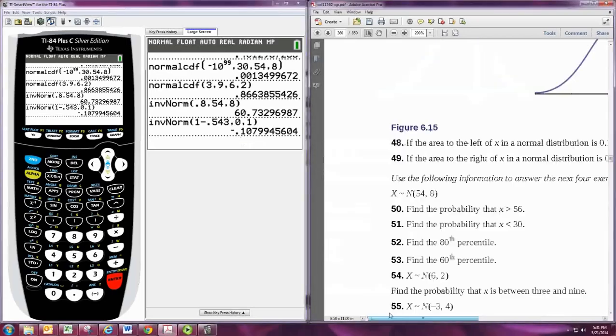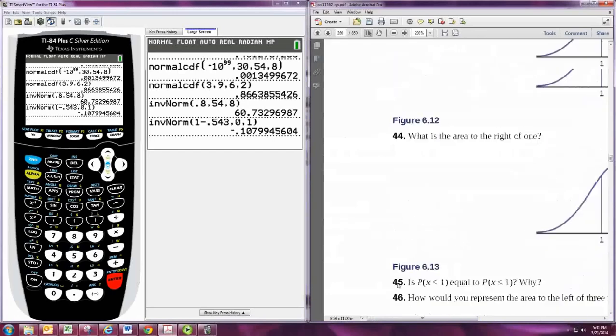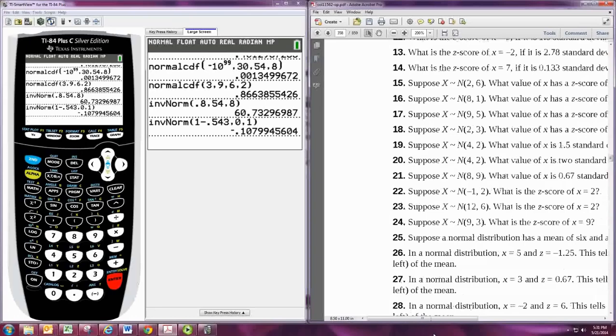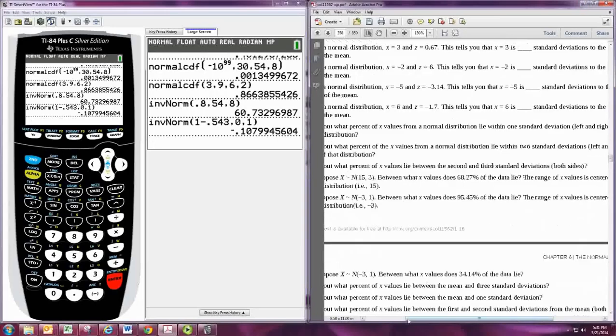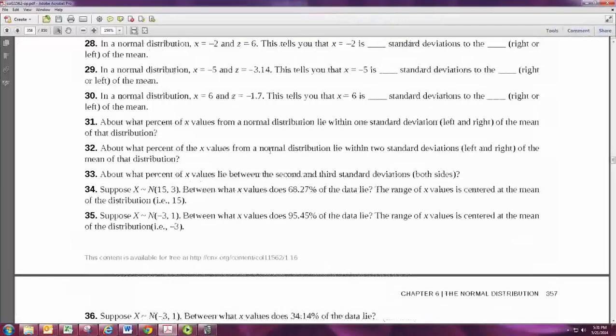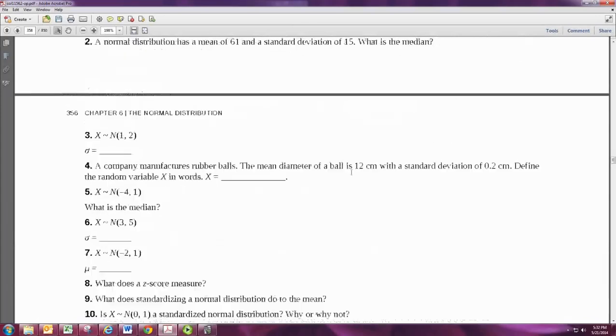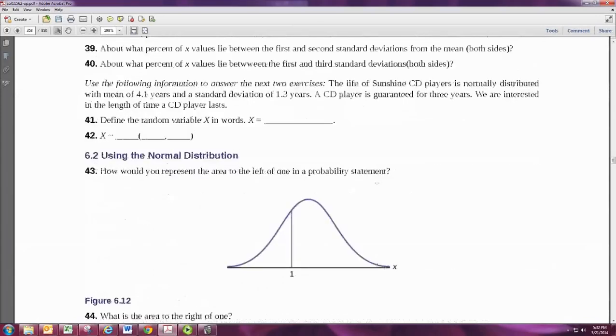The last type is to find the value of the random variable that gives the middle. There we go, we'll look at number 34. So the mean is 15 and the standard deviation is 3, in problem 34. And it says between what x values does 68.27% of the data lie? So here we want to know what two values is the area between going to be 68.27%.